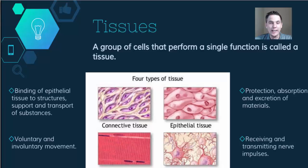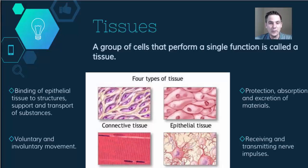Those specialized cells will group up and form tissues. Tissues are a group of cells that perform a single function. So those specialized cells are performing a single function, but doing it as one large group — and when they do that, they are called a tissue.